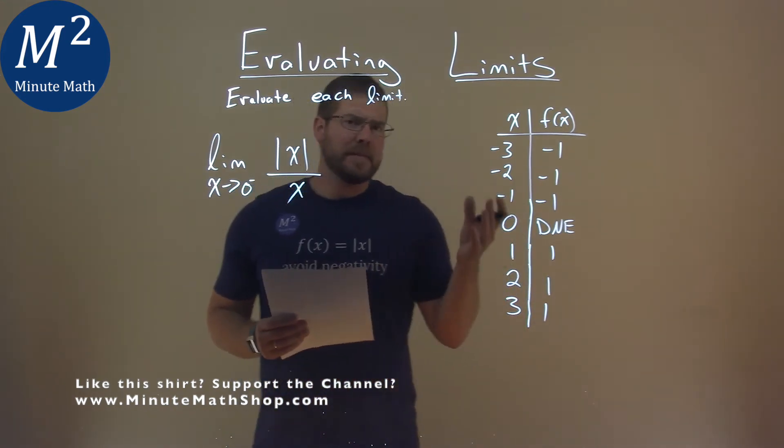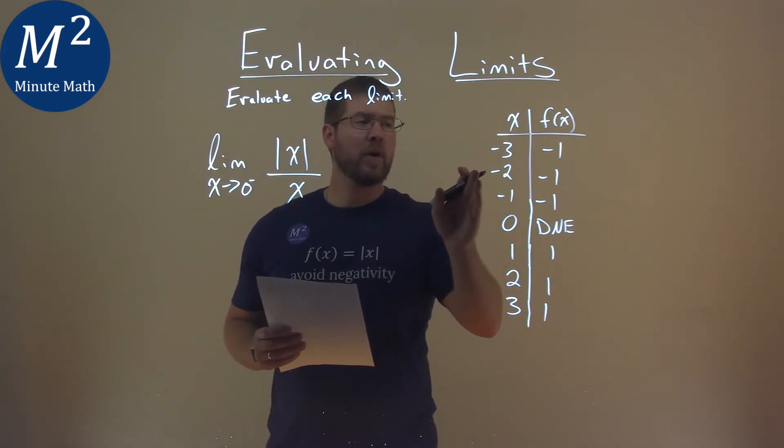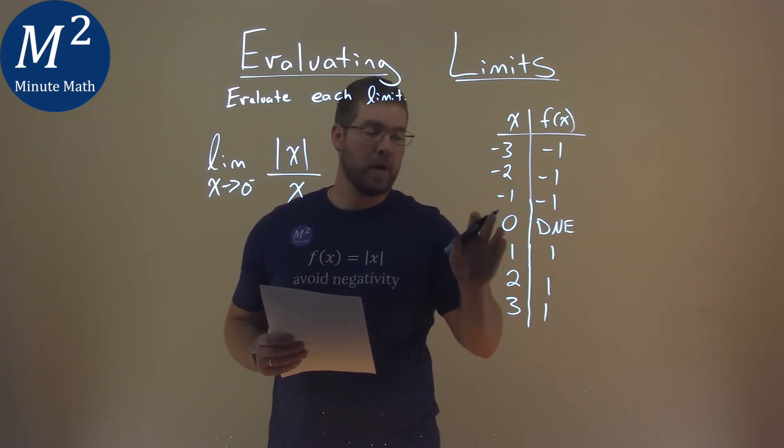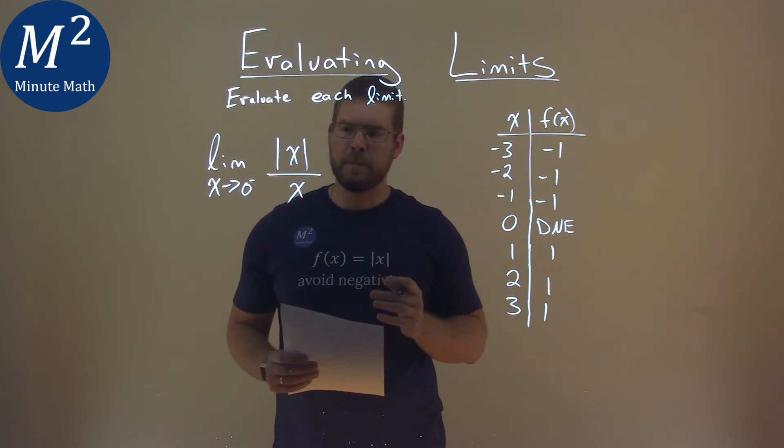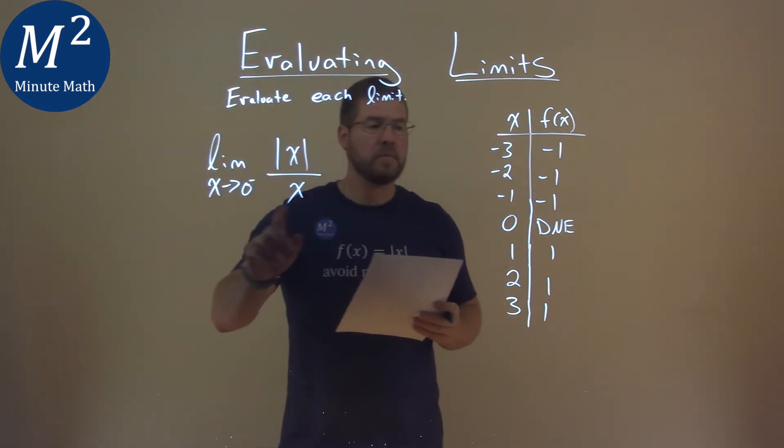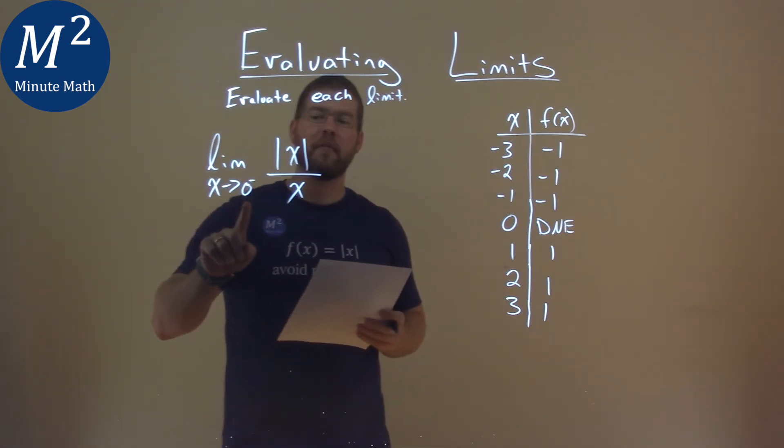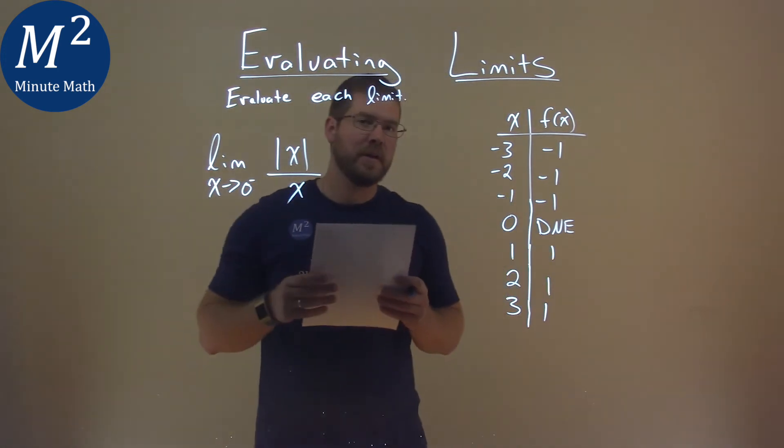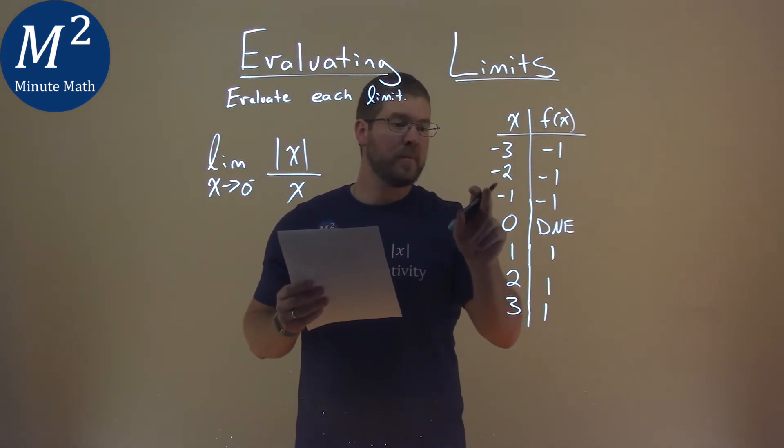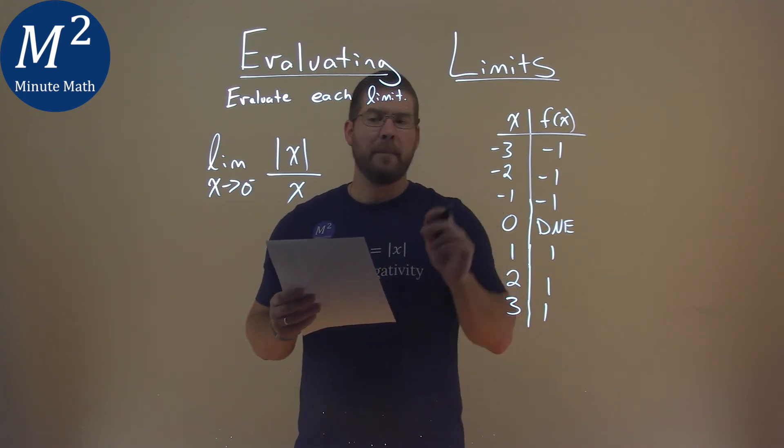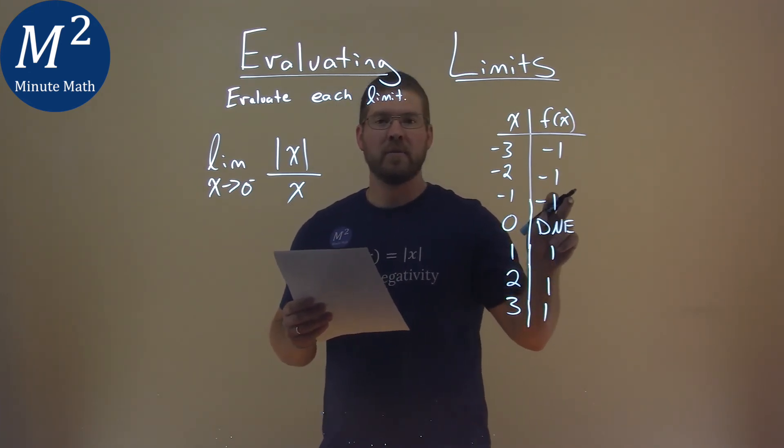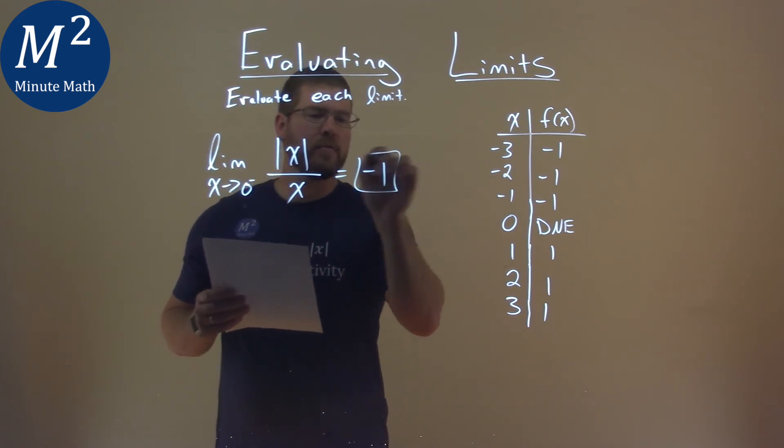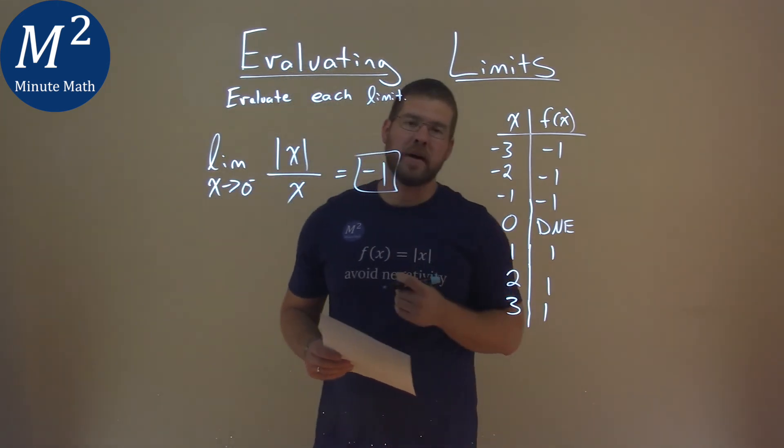So what happens here? Well, when x is negative, our output is just a negative 1. When x is positive, our output's a positive 1. So we're approaching 0, right, that does not exist, and we're approaching from the left there. So if we're approaching from the left, it's going to approach, well, the negative values is always going to be negative leading up to 0. That means we're approaching the y value of a negative 1. And so this limit here is equal to negative 1, and that's our final answer.